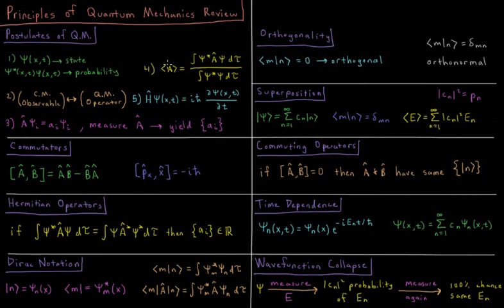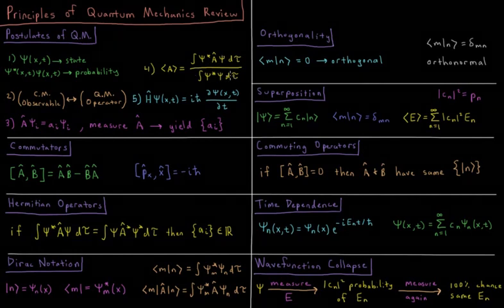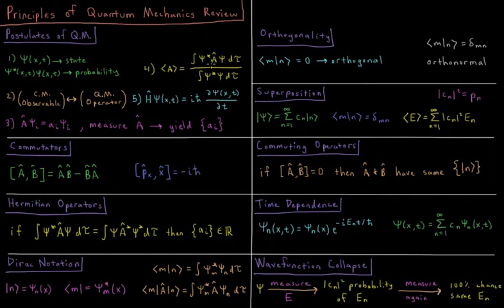Fourth, the average value. So over a large number of measurements, the average value we'll get is given by the expectation value integral, the integral of psi star operator psi, divided by the integral of psi star psi, the normalization integral.